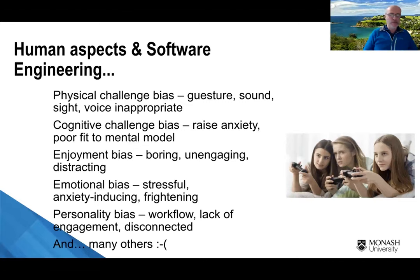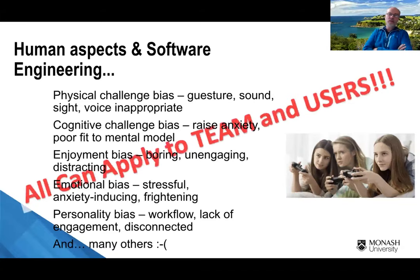There's also enjoyment bias — a lot of software is just plain boring and unengaging. Emotional bias is where software causes painful emotions to be exacerbated or good emotions to be downplayed. Personality bias is interesting too — different personality types work in different ways and together, which we've studied in the context of software testing and requirements engineering. These biases can apply to the development team but also to users, and to teams of software developers trying to work with users.